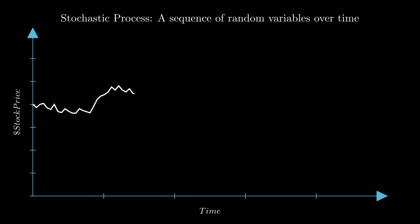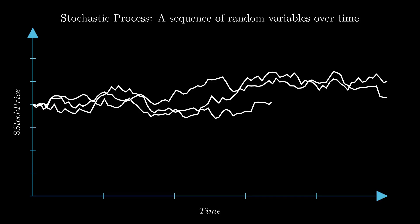So, what's a stochastic process? It's just a fancy term for a sequence of random events unfolding over time, like a stock price dancing through the market. Unlike that predictable ball drop, each step here is a roll of the dice.